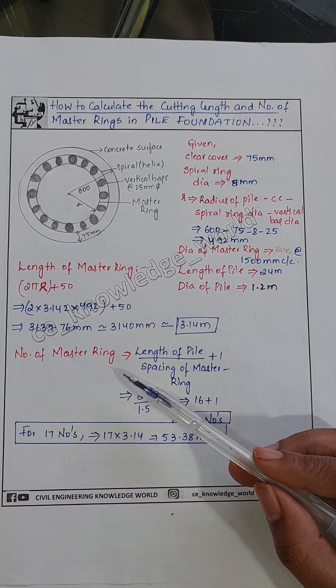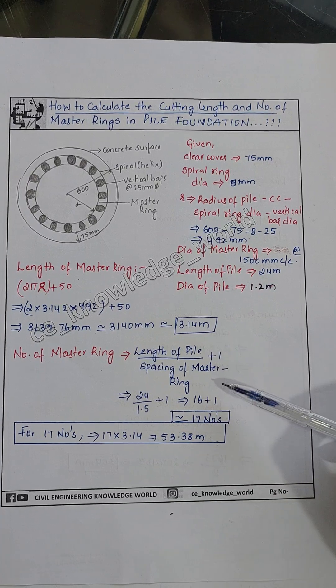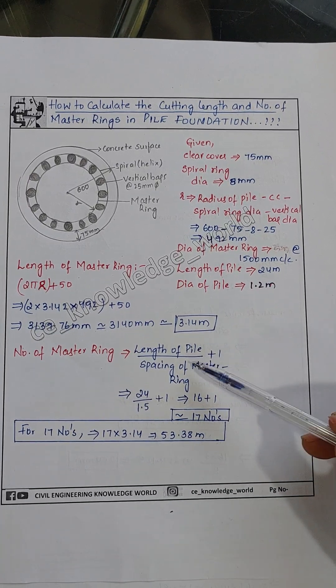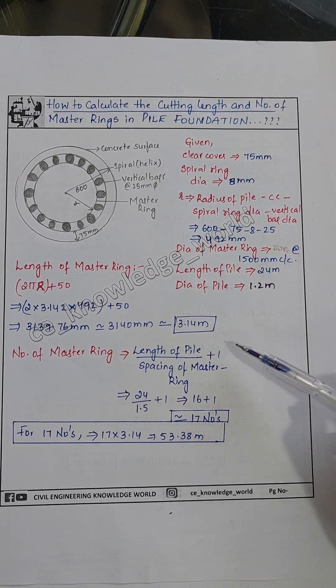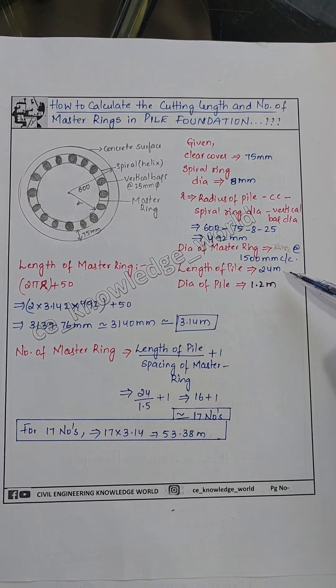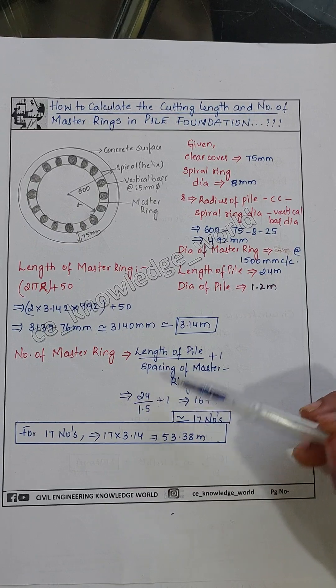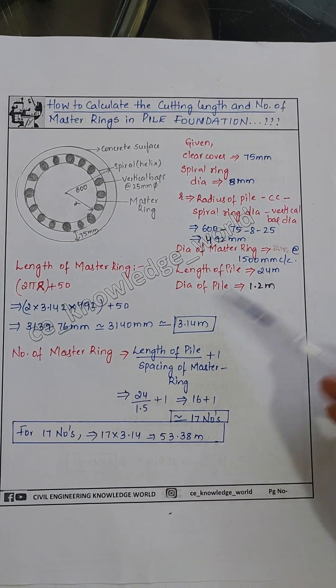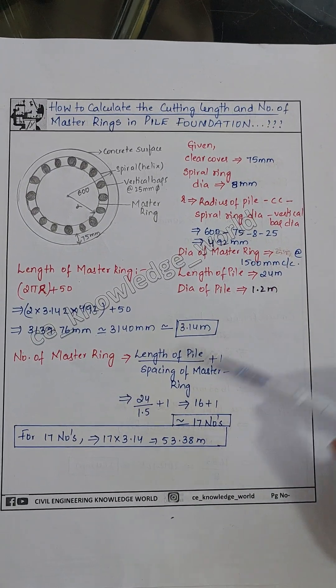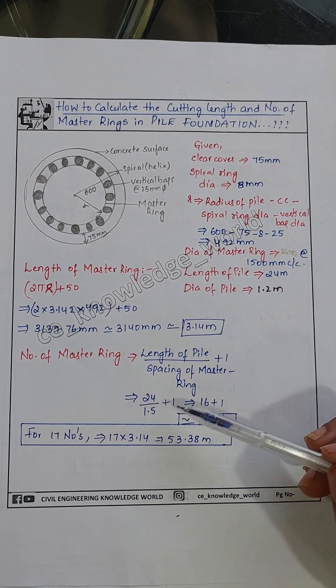To calculate the number of master rings required, the formula is: length of pile divided by spacing of master ring, plus 1. So 24 meters divided by 1.5 meters (center to center spacing), plus 1.